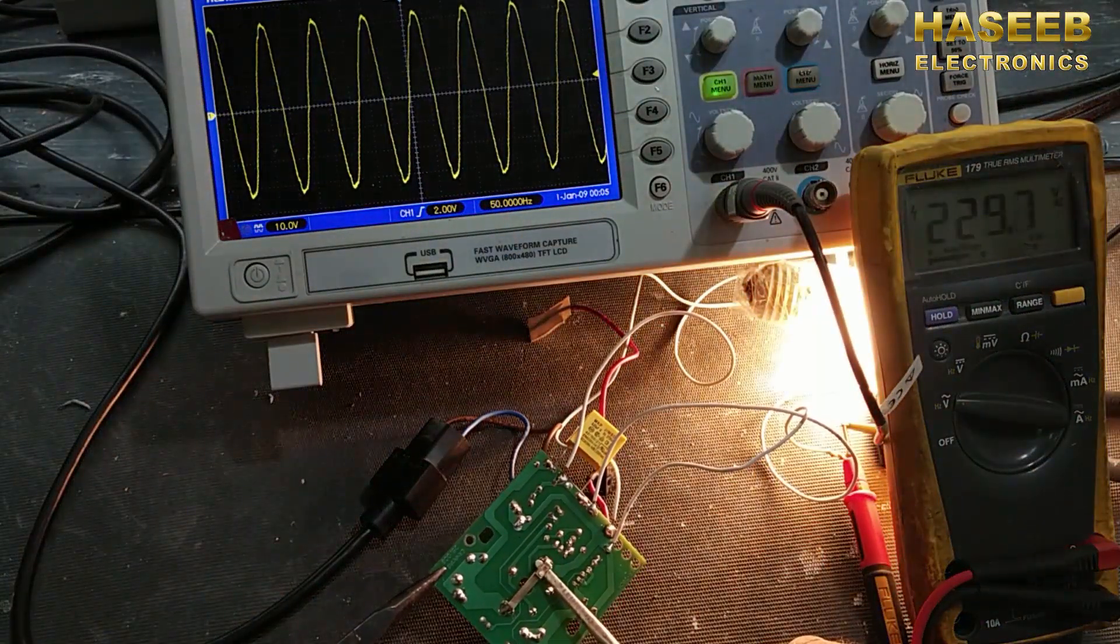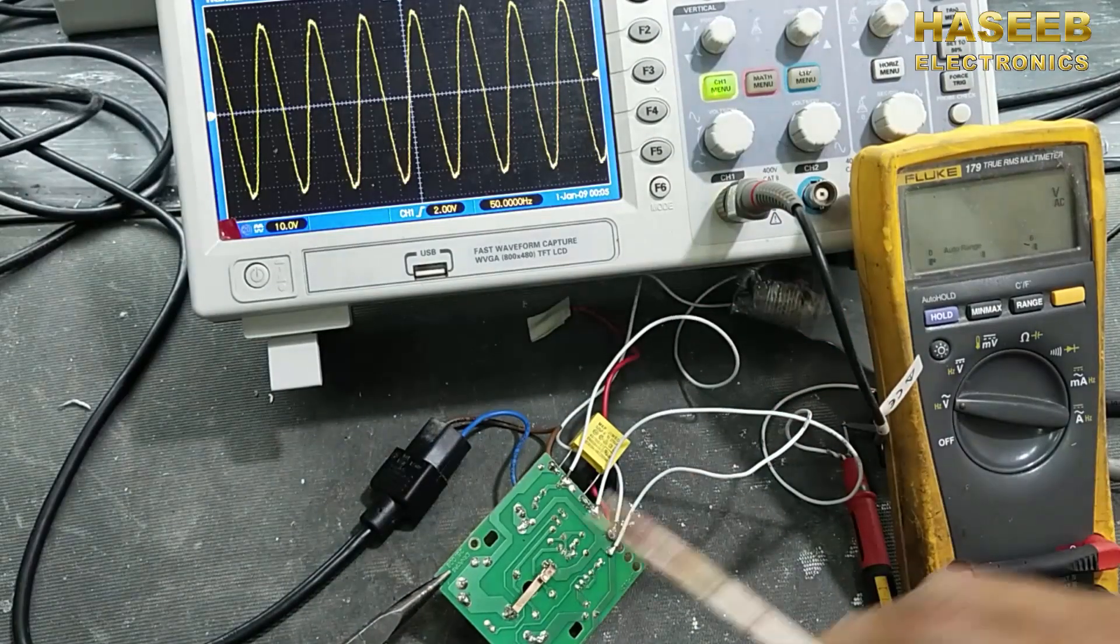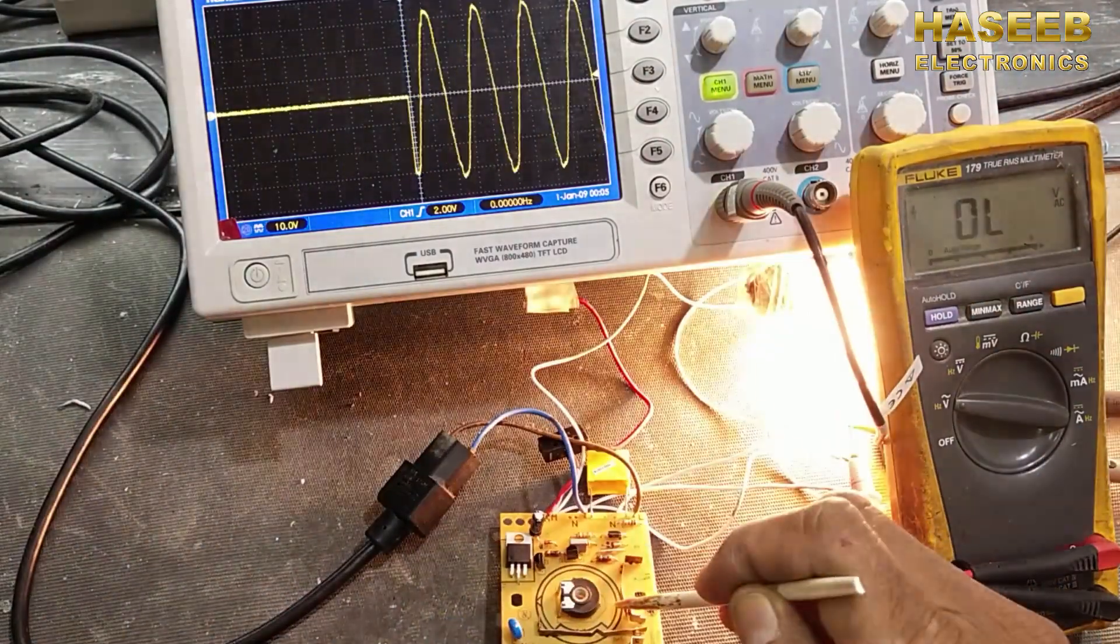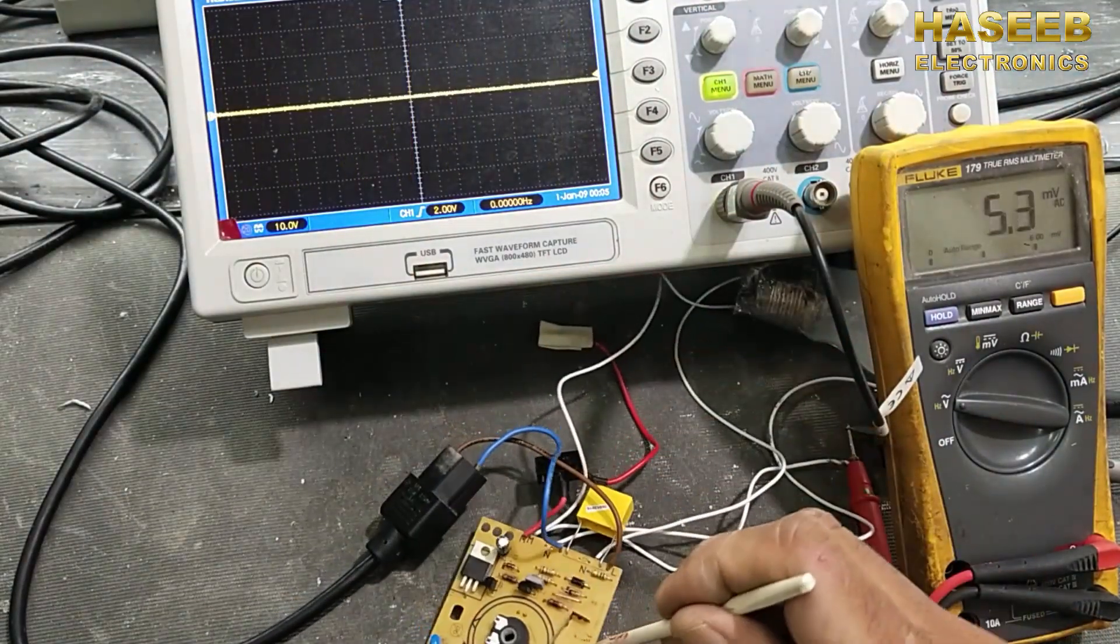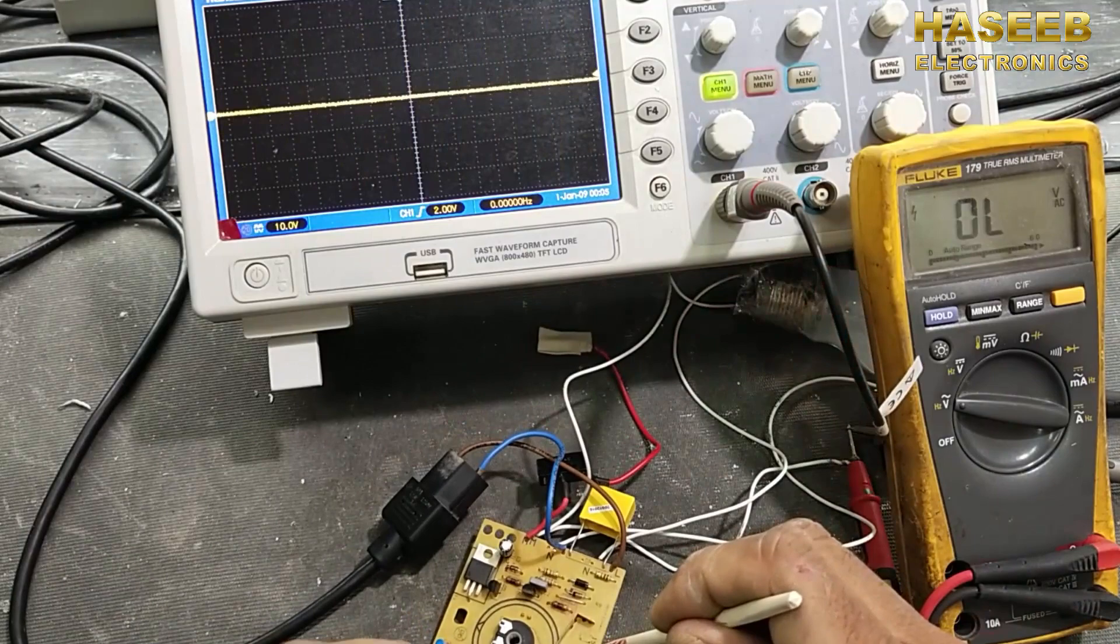And we are taking 229 volts at multimeter. Or we can rotate this knob to the full right. So here we have a potentiometer. Now we will see the function of this circuit.